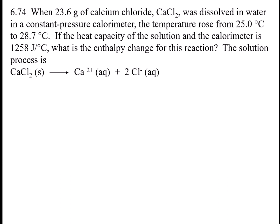Problem 6.74: When 23.6 grams of calcium chloride was dissolved in water in a constant pressure calorimeter, the temperature rose from 25 degrees Celsius to 28.7 degrees Celsius. If the heat capacity for the solution and the calorimeter is 1,258 joules per degree C, what is the enthalpy change for this reaction? The dissolution process is given below.